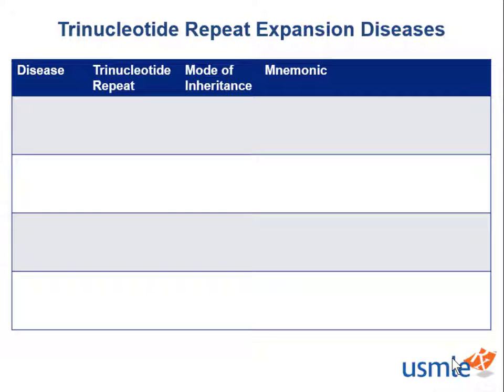So what is a trinucleotide repeat expansion disease? It's a type of DNA mutation where a group of three nucleotides is repeated. You can imagine what kind of chaos having 30 nucleotides would be instead of three, or 300 nucleotides instead of three.